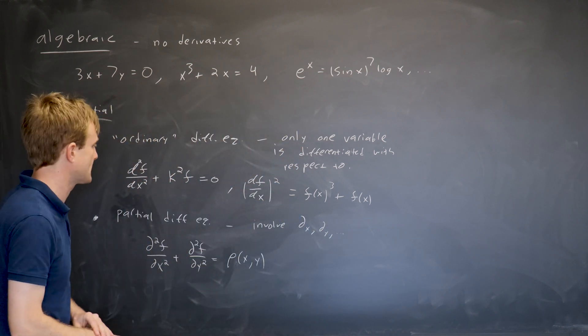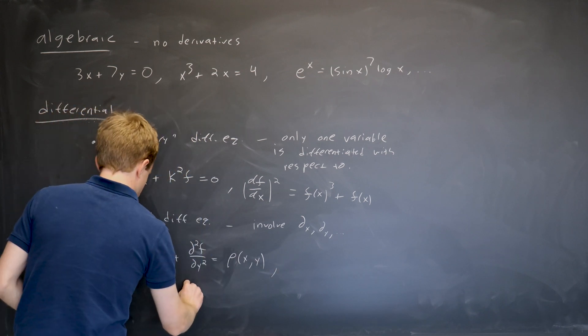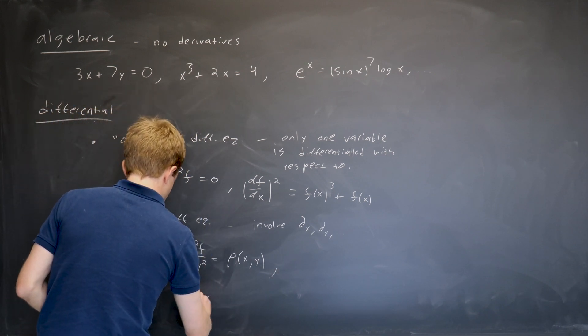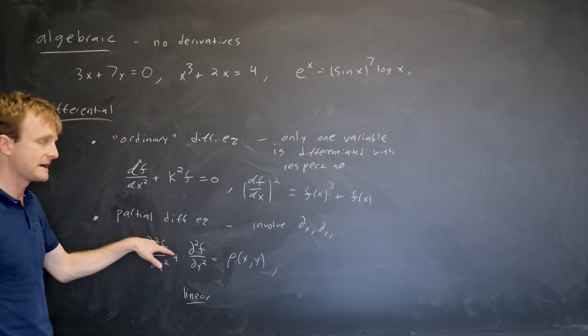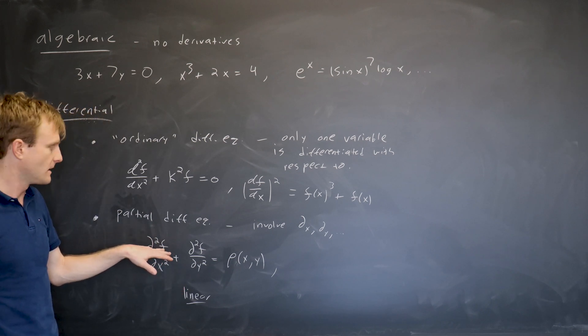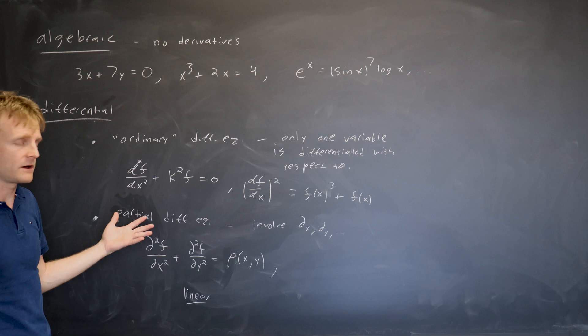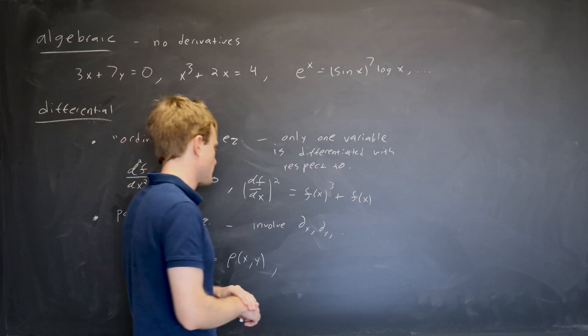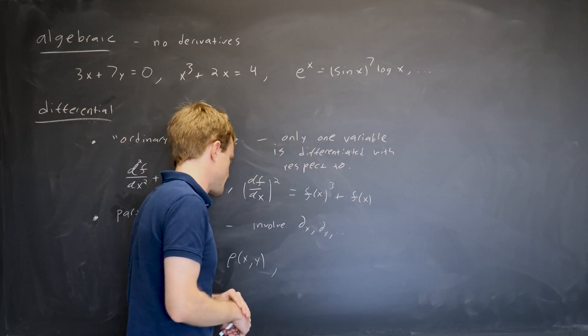And again, we can think about a linear equation like this one. This is a linear equation because f and its derivatives are not squared or done anything non-linear to. And there are also non-linear equations which come up.